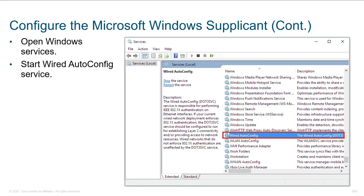Here we are within Windows Services. You may notice that under Wired AutoConfig, this service is disabled. By enabling it, we're going to add support for 802.1x authentication. This is what we're talking about when we say a native supplicant — Windows, Linux, and OSX all have .1x clients.